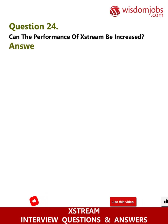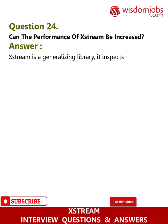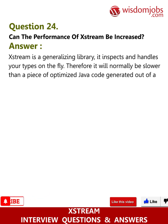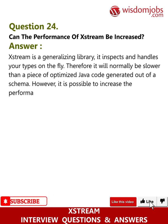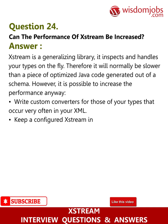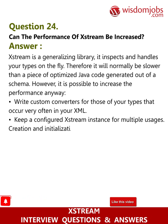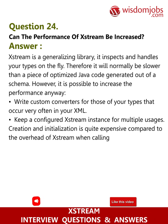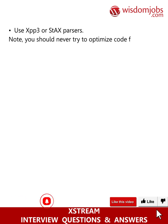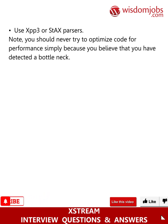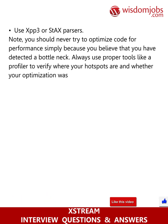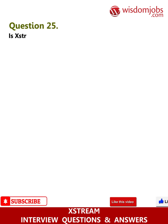Question 24: Can the performance of XStream be increased? Answer: XStream is a generalizing library — it inspects and handles your types on the fly, so it will normally be slower than optimized Java code generated from a schema. However, performance can be improved: write custom converters for types that occur very often; keep a configured XStream instance for multiple usages since creation and initialization is expensive; use XPP3 or StAX parsers. Note: never try to optimize code simply because you believe you've detected a bottleneck — always use proper tools like a profiler to verify hotspots.